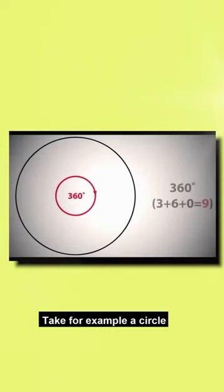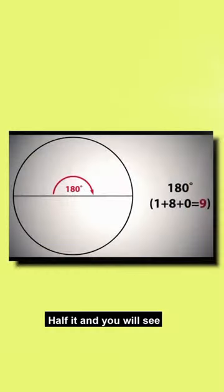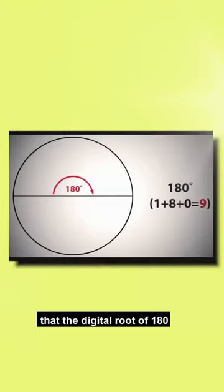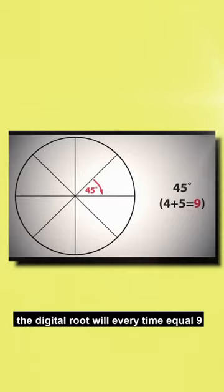For example, a circle — its central angle, which is 360, has a digital root of 9. Half it, and you will see that the digital root of 180 also equals 9. If you keep on halving this angle, the digital root will every time equal 9.